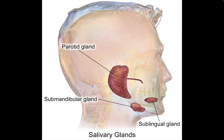Milan classification 2 is non-neoplastic. The main pathologies are sialadenitis. Subclassifications include acute sialadenitis, chronic sialadenitis, granulomatous sialadenitis, as well as lymphoepithelial sialadenitis, otherwise known as LESA.